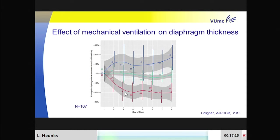And in 45% of patients, the thickness of the diaphragm decreased. There are two important things here. First, the decrease in diaphragm thickness happened within the first three to four days of controlled mechanical ventilation. And those patients who lost diaphragm thickness were those with the highest level of support, which supports a role for disuse in developing weakness of the respiratory muscles.